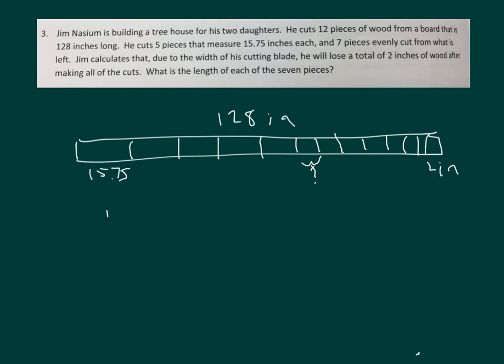First off, let's take 15.75 and figure out how much this is. So we multiply it by 5. 5 times 5 is 25, regroup 2. 5 times 7 is 35, plus 2 is 37, regroup 3. 5 times 5 is 25, plus 3 is 28, regroup 2. 5 times 1 is 5, plus 2 is 7. So 78.75 of this is already taken up by those 5 pieces.